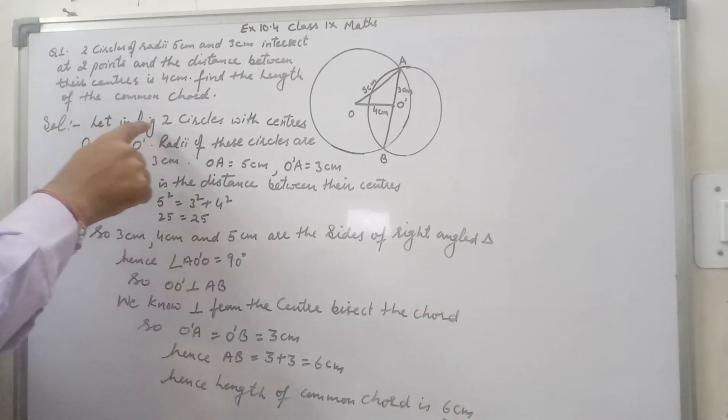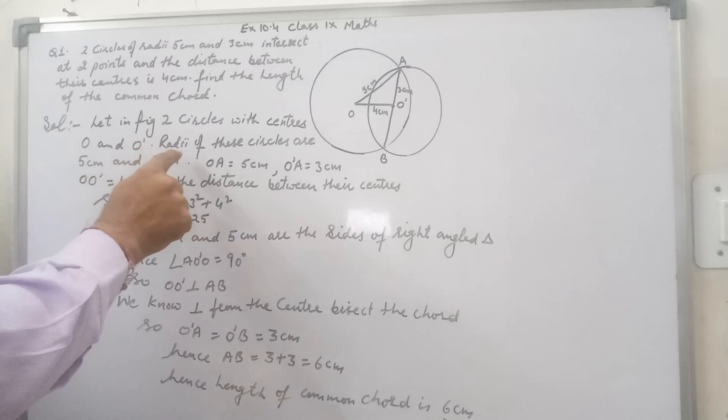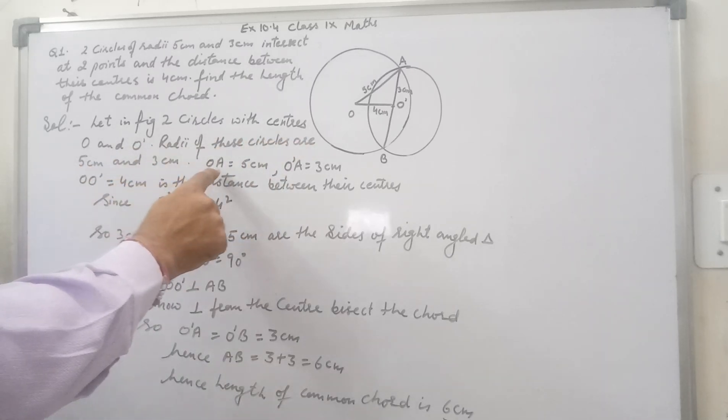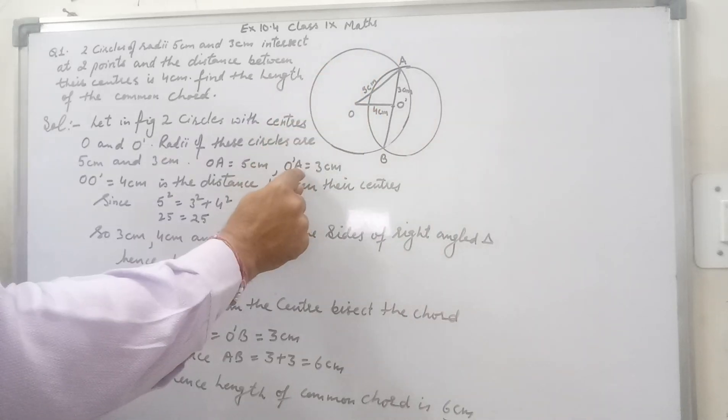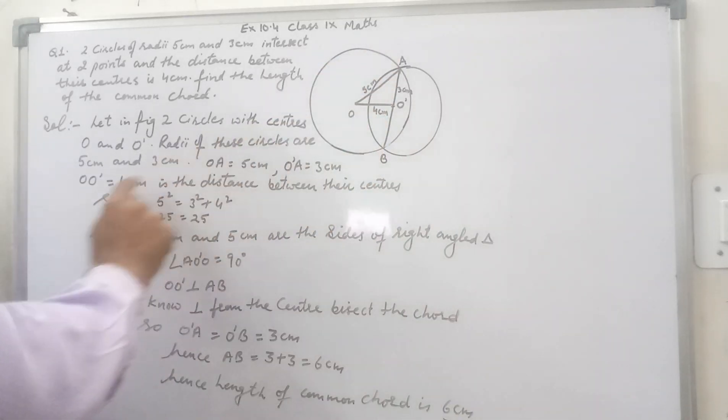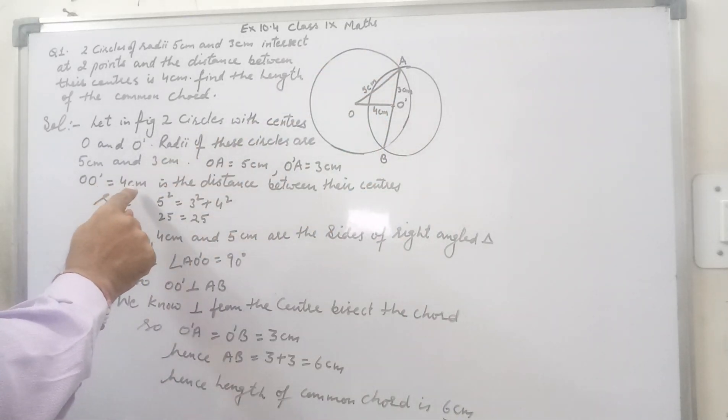I have written all these. See, let in figure 2 circles with centers O and O dash. Radii of these circles are 5 cm and 3 cm. OA is 5 cm. O dash A is 3 cm. And O O dash is 4 cm that is the distance between their centers.